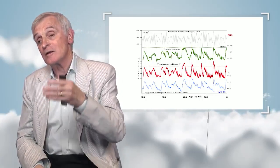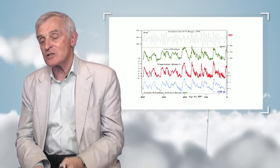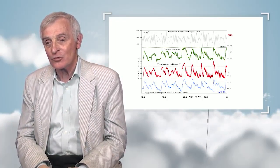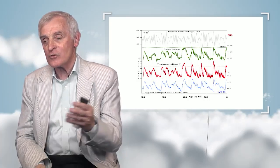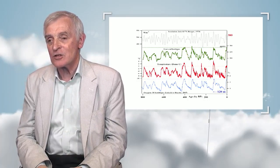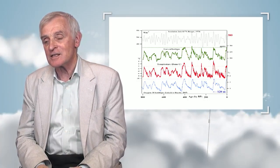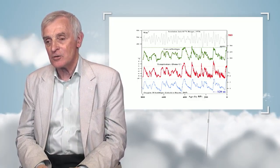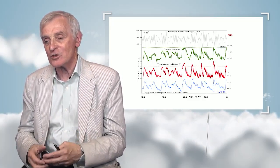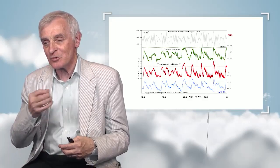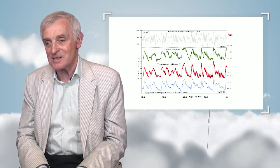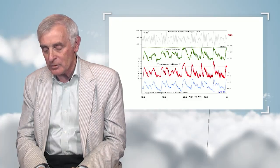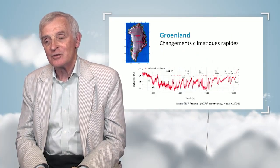The pacemaker is really the top curve. The variations are due to an evolution in the position of the Earth on its orbit. 130,000 years ago, there was a lot of sunlight in the summer, and this is the reason why we have an alternation between glacial and interglacial periods.